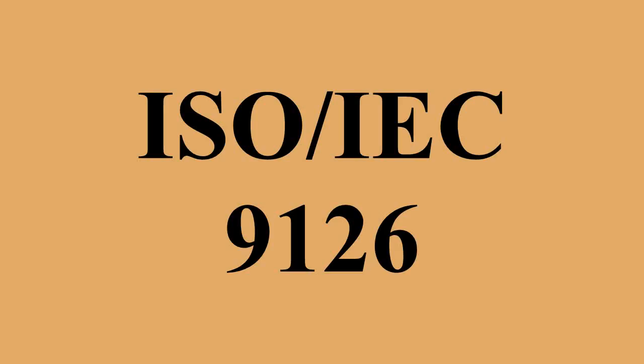The standard is divided into four parts: Quality model, External metrics, Internal metrics, and Quality in use metrics. The quality model presented in the first part of the standard, ISO IEC 9126-1, classifies software quality in a structured set of characteristics and sub-characteristics.